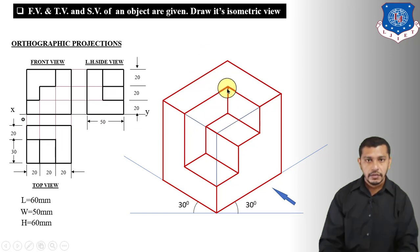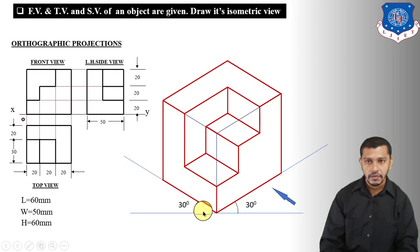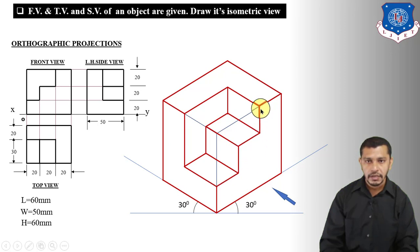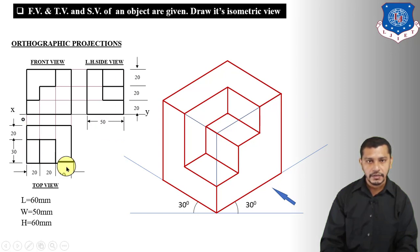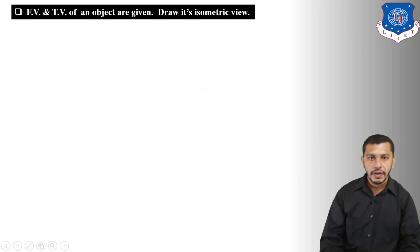Connect this point to this point — this will be the final isometric view of the object. The dimensions shown are: width 50, length 60, and the step edges are 20, 20, 20mm with this edge being 30mm. If you want to draw the isometric projection of the object, you need to convert these dimensions into isometric dimensions using an isometric scale.